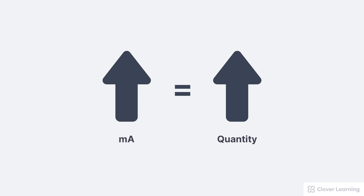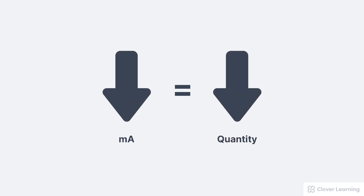Here's the relationship we need to understand: increasing the MA, which is the tube current, increases the beam quantity, also known as the intensity. Of course, the reverse is also true — if we decrease the MA, this results in a decreased beam quantity or decreased intensity. This relationship assumes that only the MA is changing and all other factors remain the same.